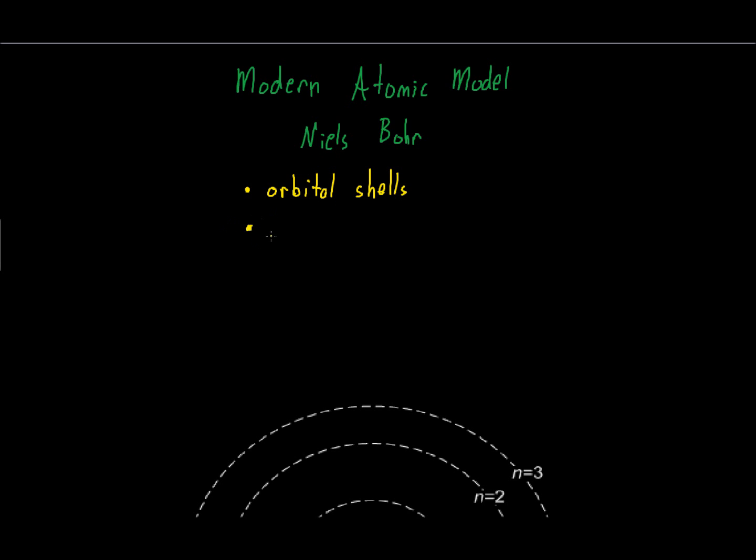He also said that these orbital shells themselves actually have defined shapes. And the math involved defines this, everybody. If you've ever heard of quantum mechanics, yeah, it's very tough math that's involved in actually determination of a lot of this stuff. Now, more importantly, these shells and these shapes are quantized.